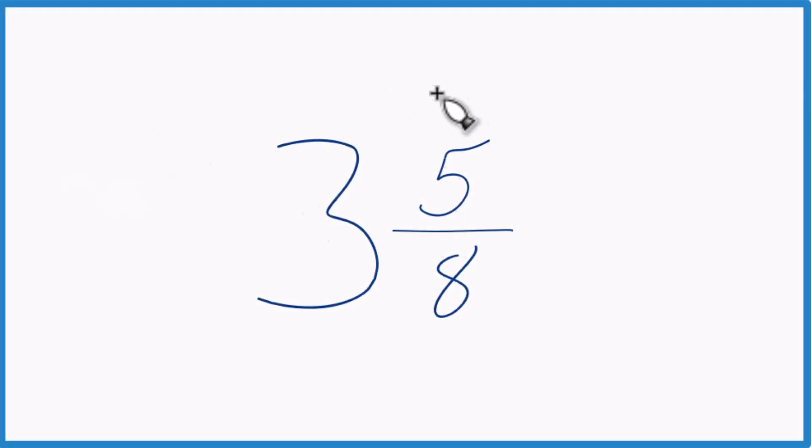Okay, let's write the mixed number 3 and 5 eighths as an improper fraction. Here's how you do it.